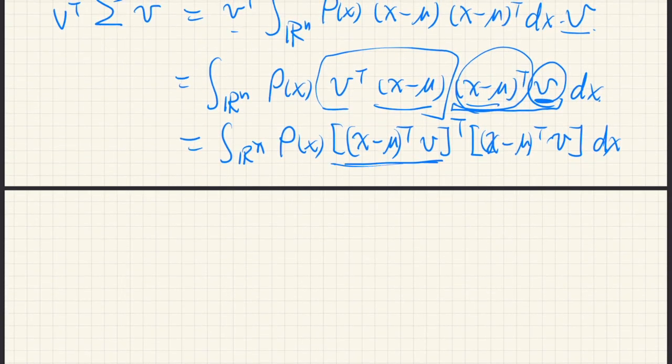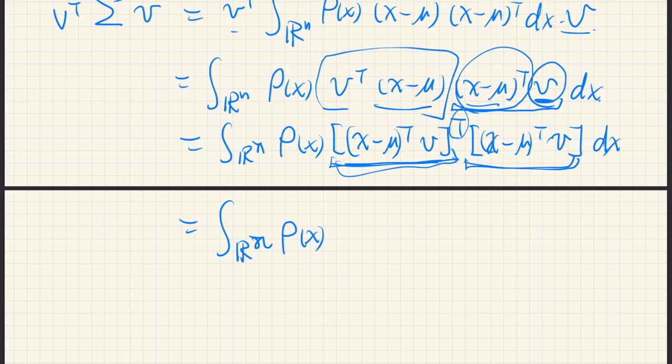Since this is a dot product, it is just a scalar. So the transpose doesn't mean anything actually. And we have the same numbers here and here. So this is actually a square. So x minus mu transpose v squared dx.